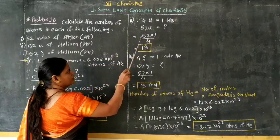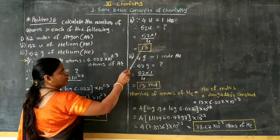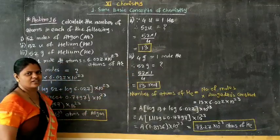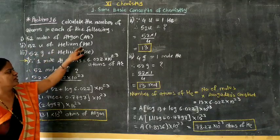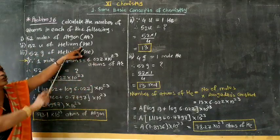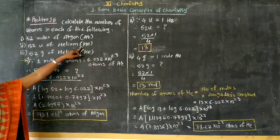52 into 1 divided by 4, answer is 13. Therefore, total 52 unified mass of helium contains 13 atoms of helium.